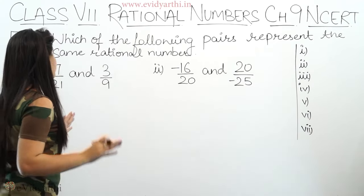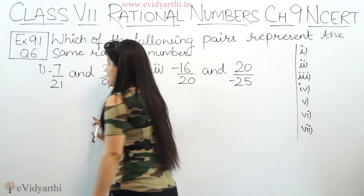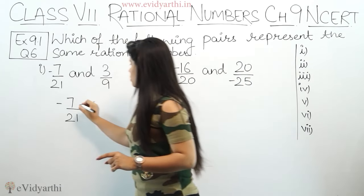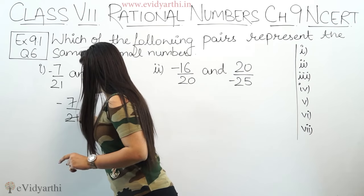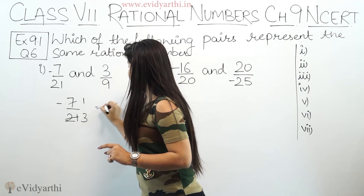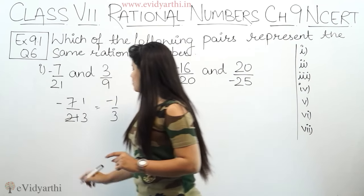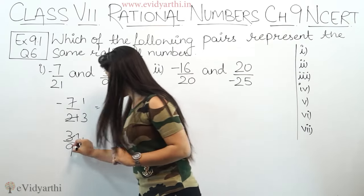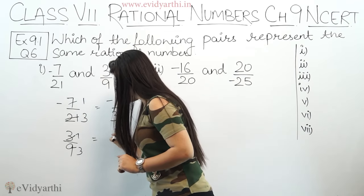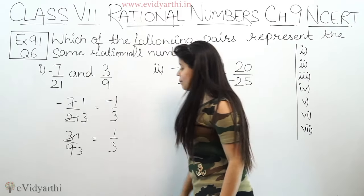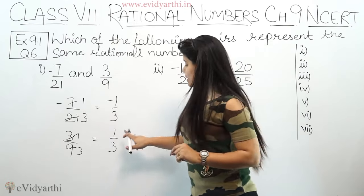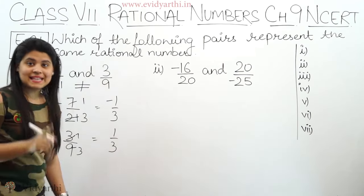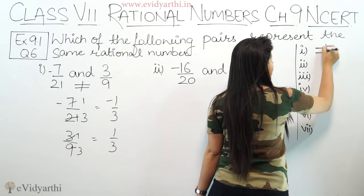First part is minus 7 upon 21 and 3 upon 9. Let's solve this. Minus 7 upon 21 - if I convert to smallest form, this will be 7 ones are 7 and 7 threes are 21, so this becomes minus 1 upon 3. Similarly, second one is 3 upon 9. This will be 3 ones are 3 and 3 threes are 9, so this becomes 1 upon 3. Now, this is minus 1 upon 3 and this is positive 1 upon 3, so they are not equal or not the same rational numbers. They are not same.